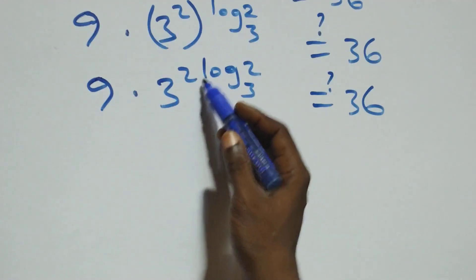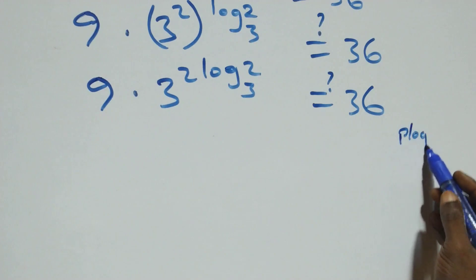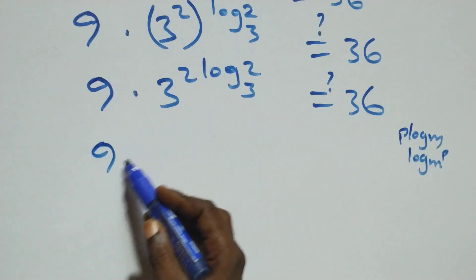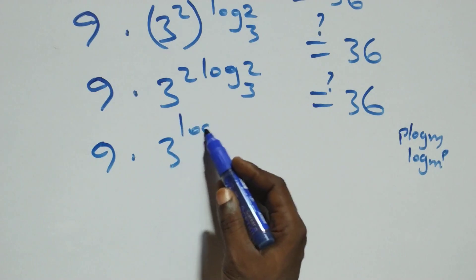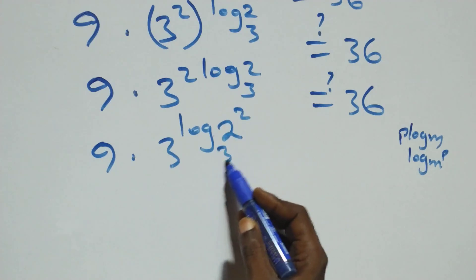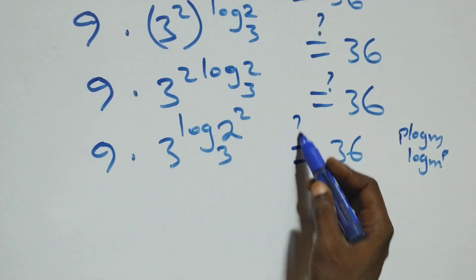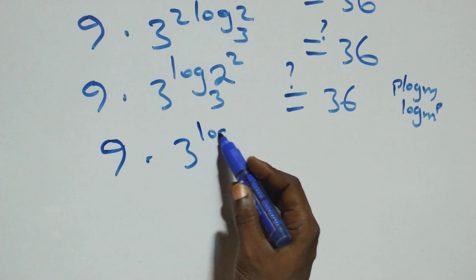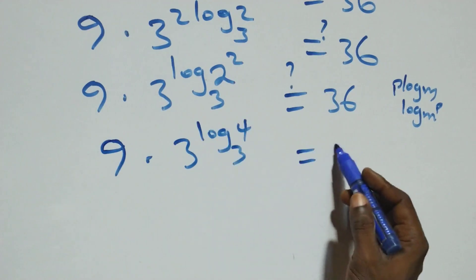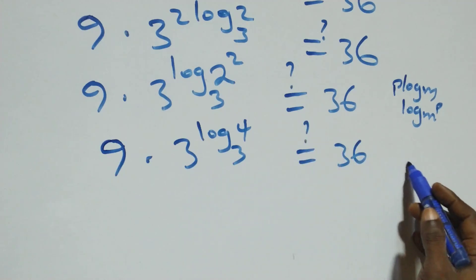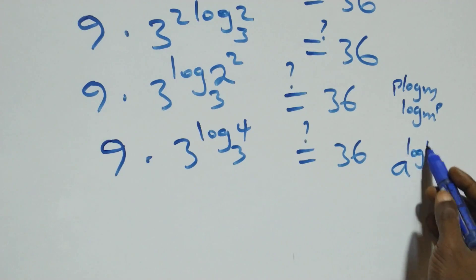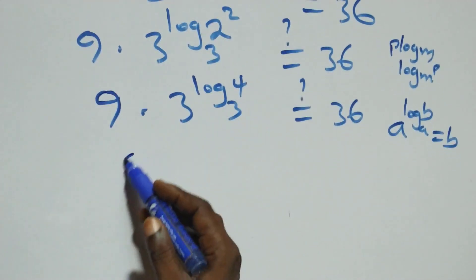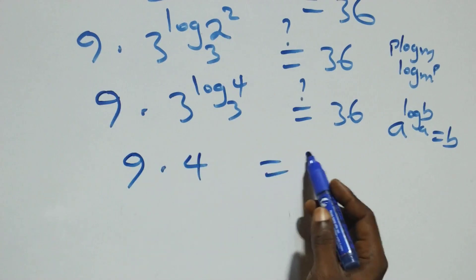Using the power rule, 3^(2·log₃2) equals 3^(log₃(2²)) equals 3^(log₃4). Then applying the logarithm law a^(logₐ B) equals B, we get 3^(log₃4) equals 4. Therefore we have 9 times 4, which equals 36, matching the right-hand side.